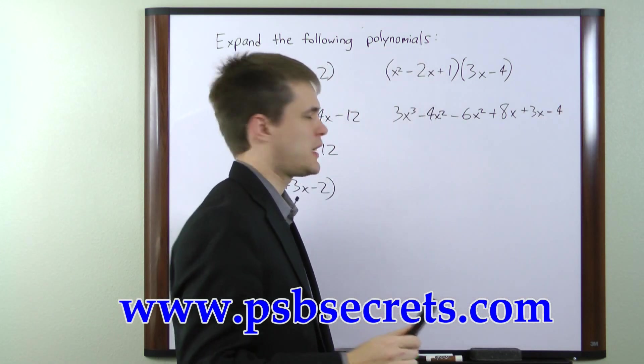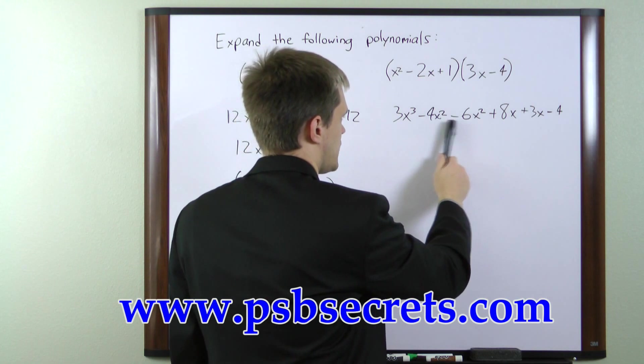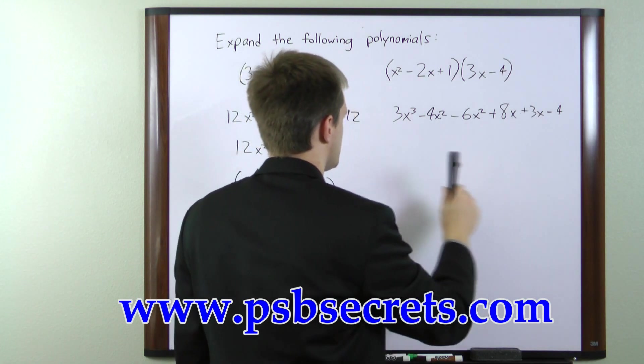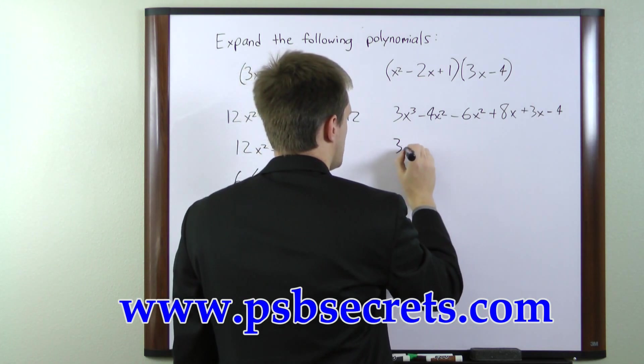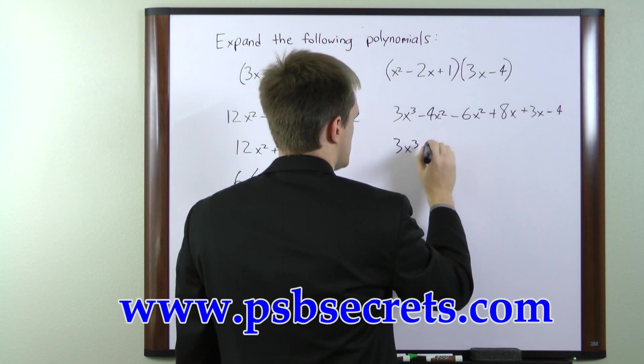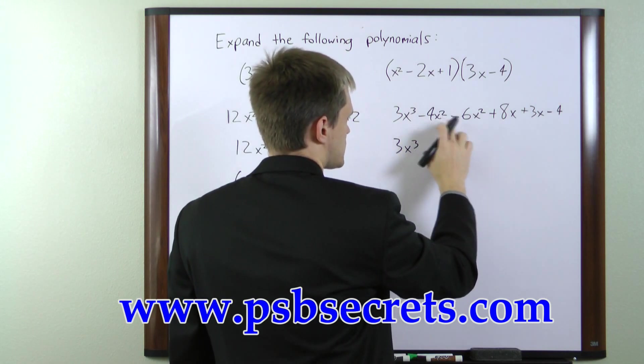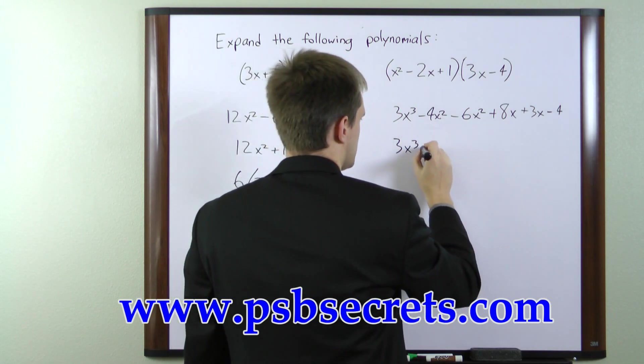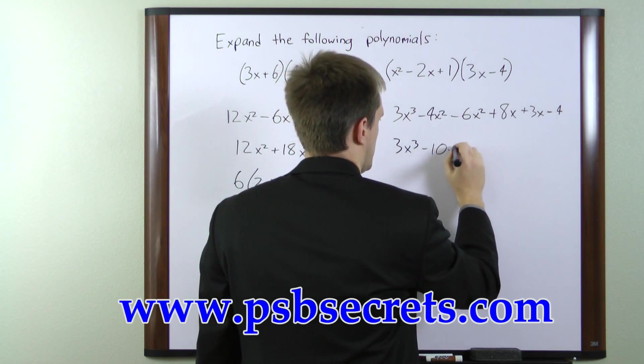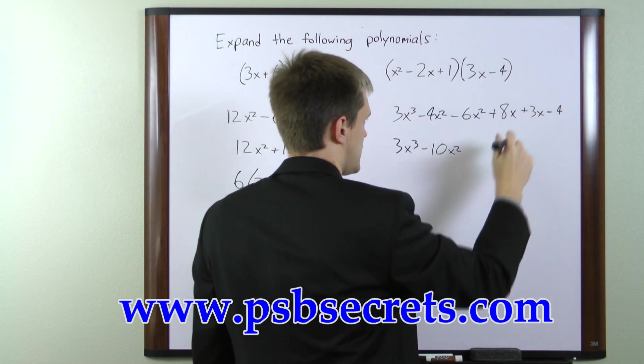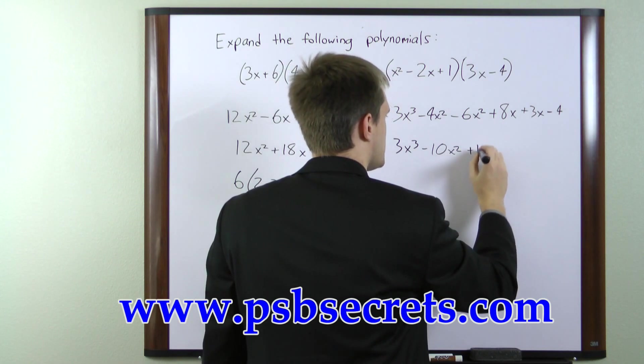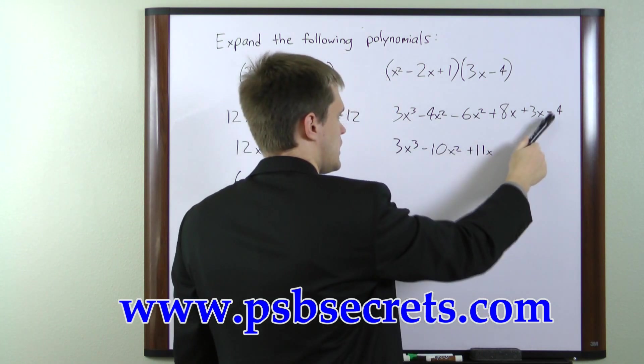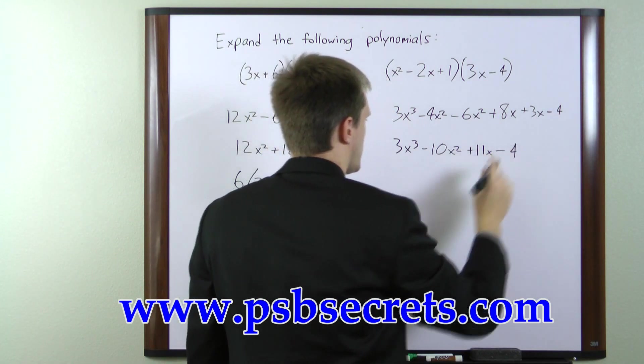Now once again, we need to combine like terms. We have a pair of x squareds and a pair of x's, so we'll go ahead and combine those. We have 3x cubed minus 4x squared minus 6x squared gives us minus 10x squared. Plus 8x plus 3x gives us plus 11x, and we still have minus 4.